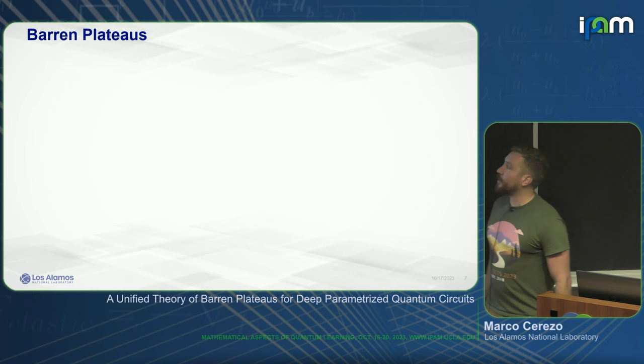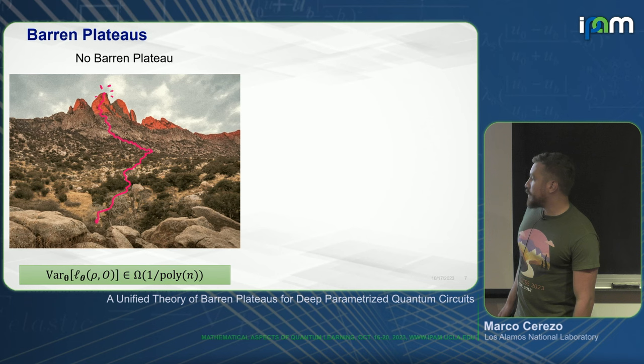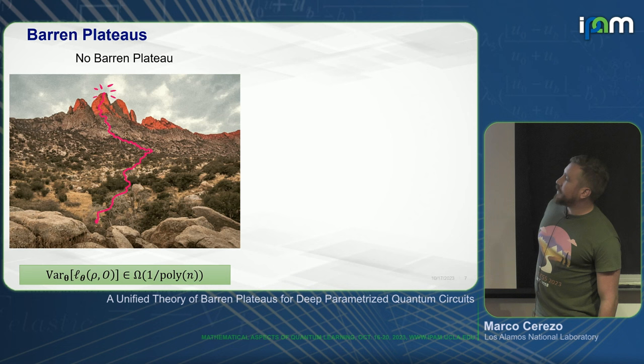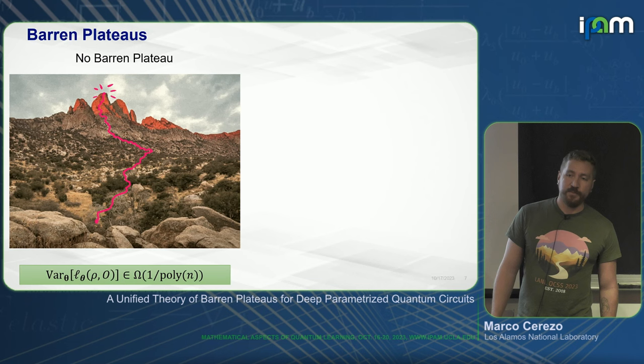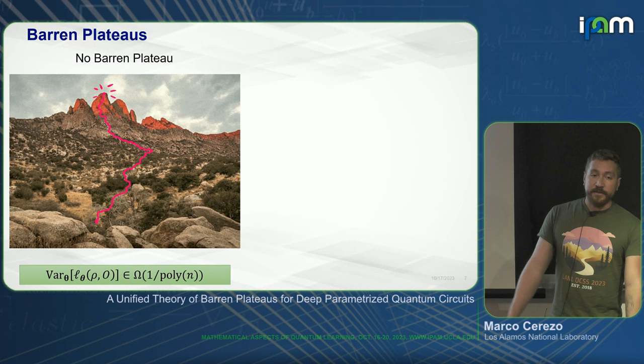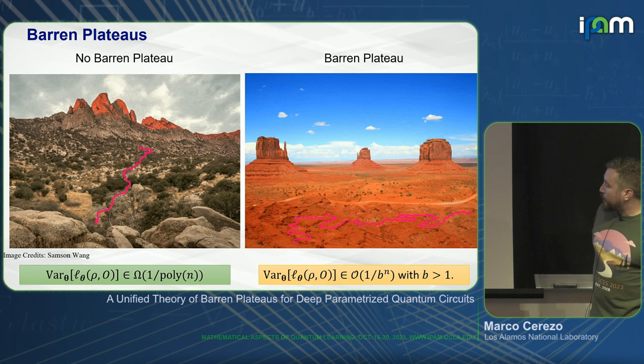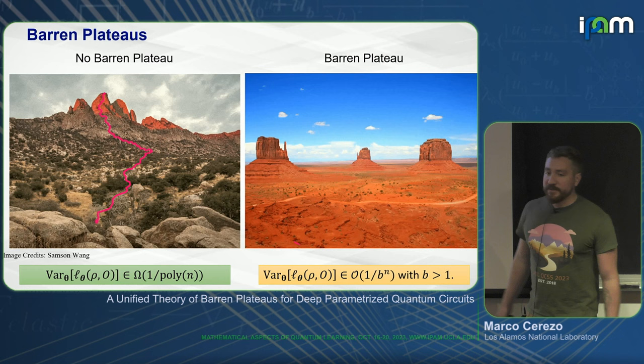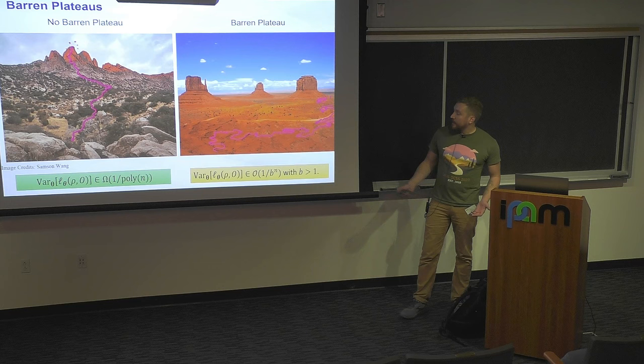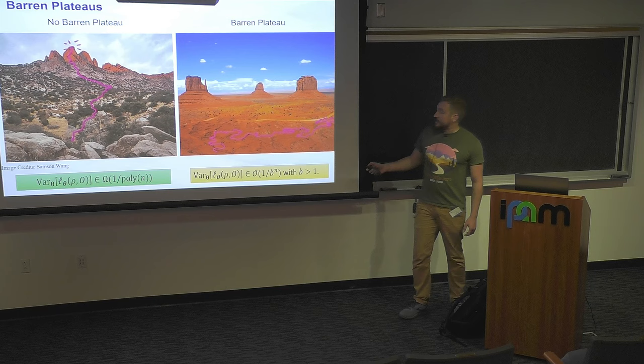What is a Barren Plateau? Mathematically, you do not have a Barren Plateau when the variance of the loss function decays at most polynomially with the number of qubits — meaning that randomly initialized, you can use gradient-free or gradient-based methods and likely find the global minimum. With a Barren Plateau, the variance is exponentially small in the number of qubits, so you need an exponential number of shots to find a loss-minimizing direction. Barren Plateaus are fundamentally a precision issue.